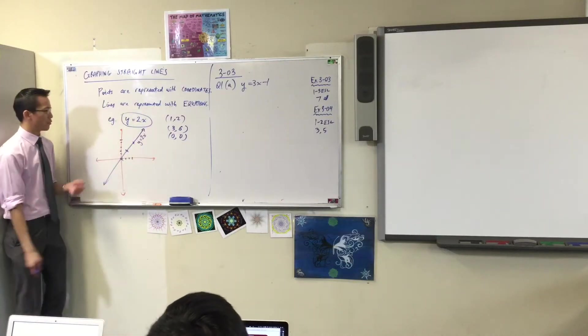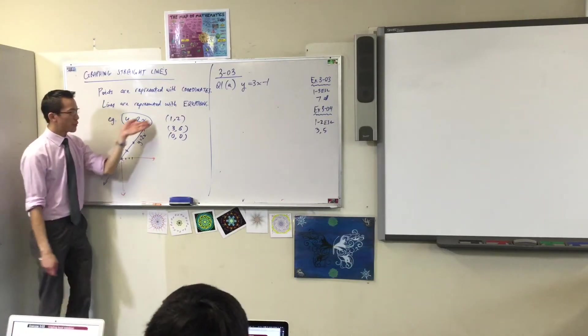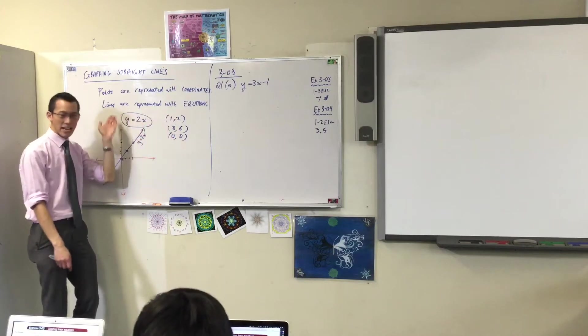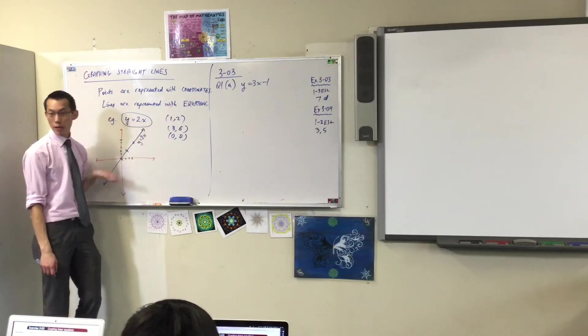Remember I said have a look at this first example. If you've got an equation, just find some points that satisfy that equation and you'll get points on the line.